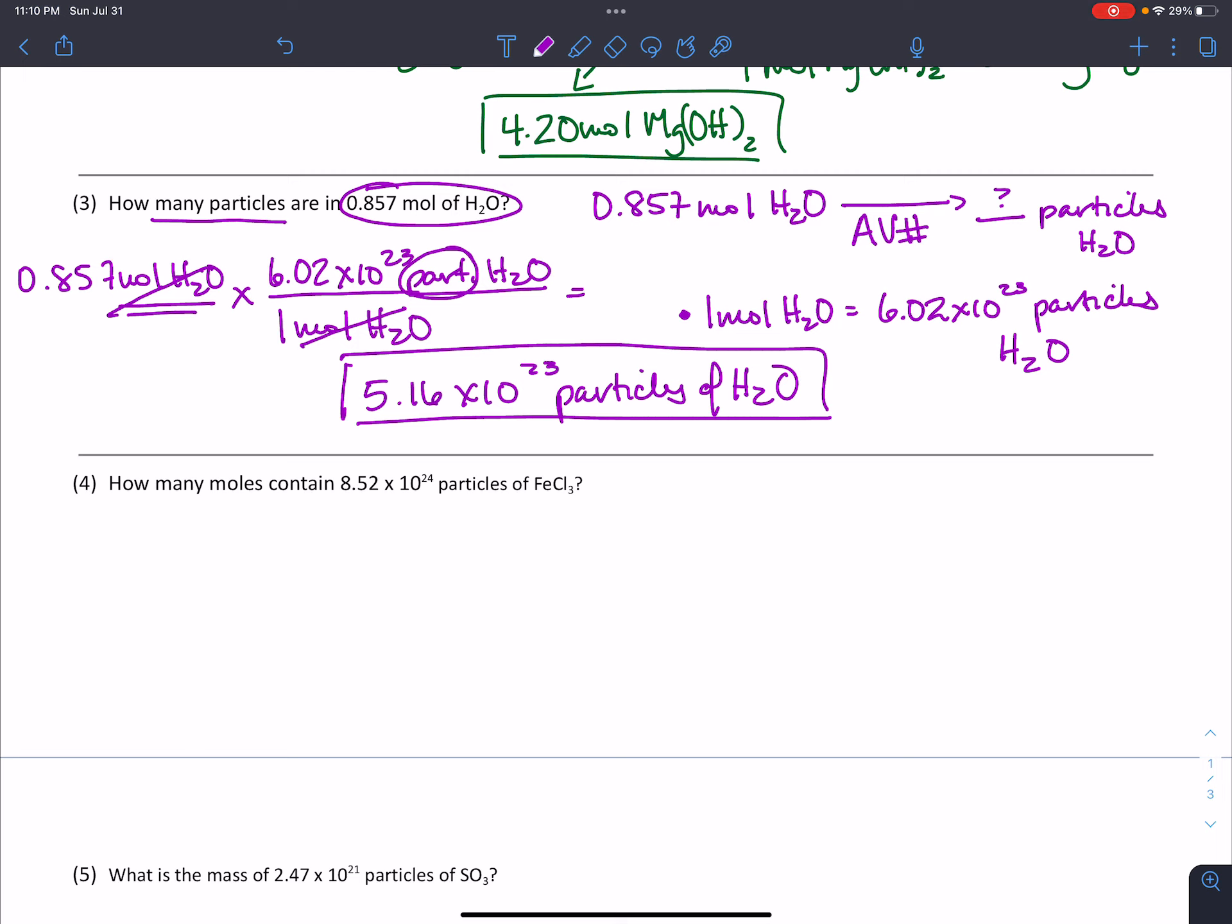Let's move on to number 4. This one says how many moles contain 8.52 times 10 to the 24th particles of FeCl3. So we've been given particles of iron 3 chloride and we're asked how many moles of this substance we have. So we have 8.52 times 10 to the 24th particles of FeCl3 and we're asked to convert that into moles of FeCl3.